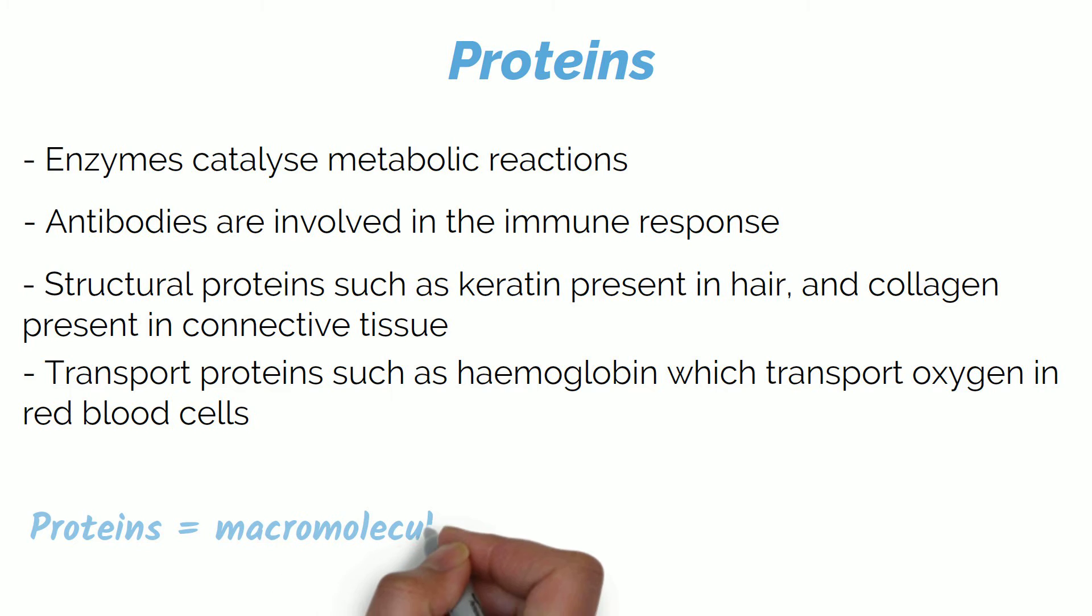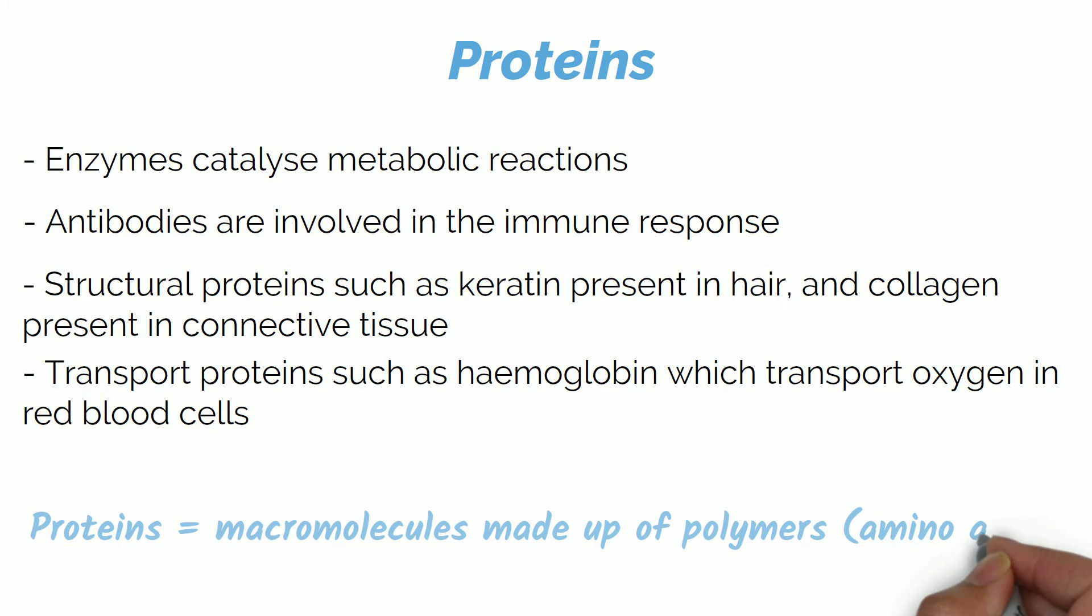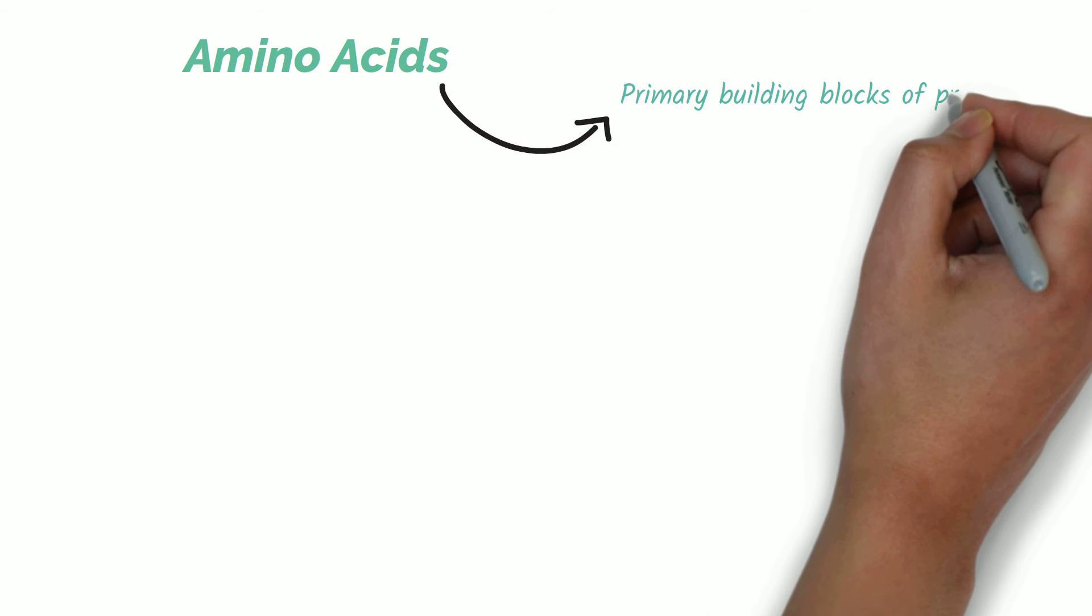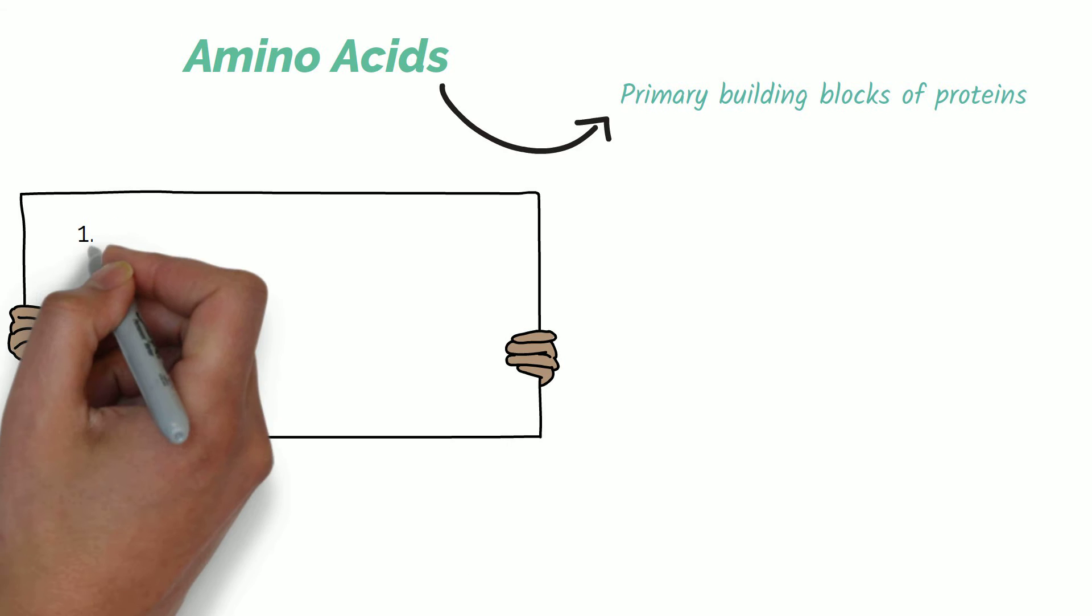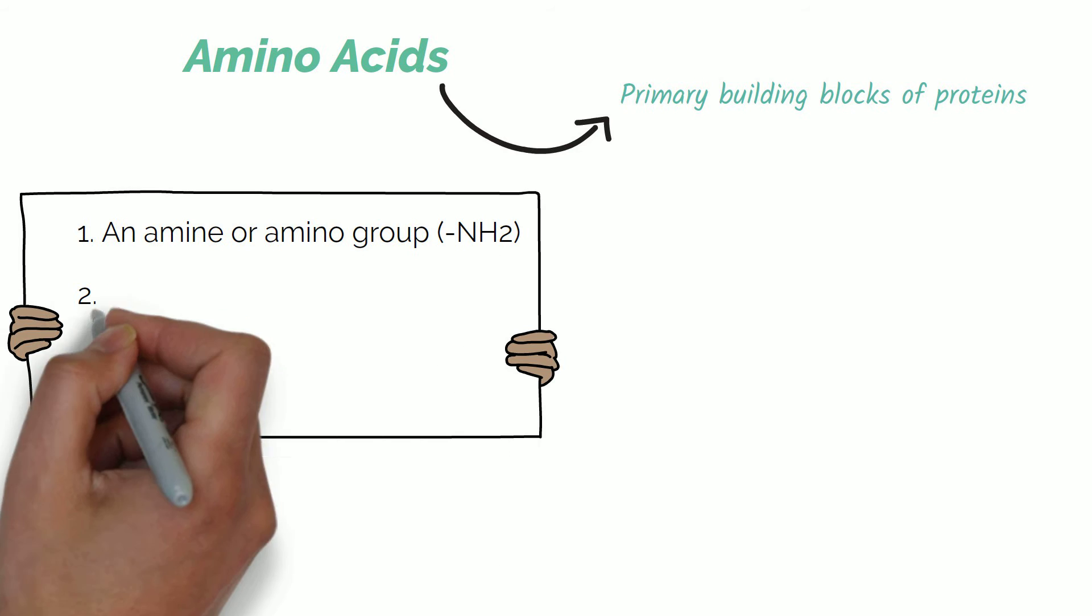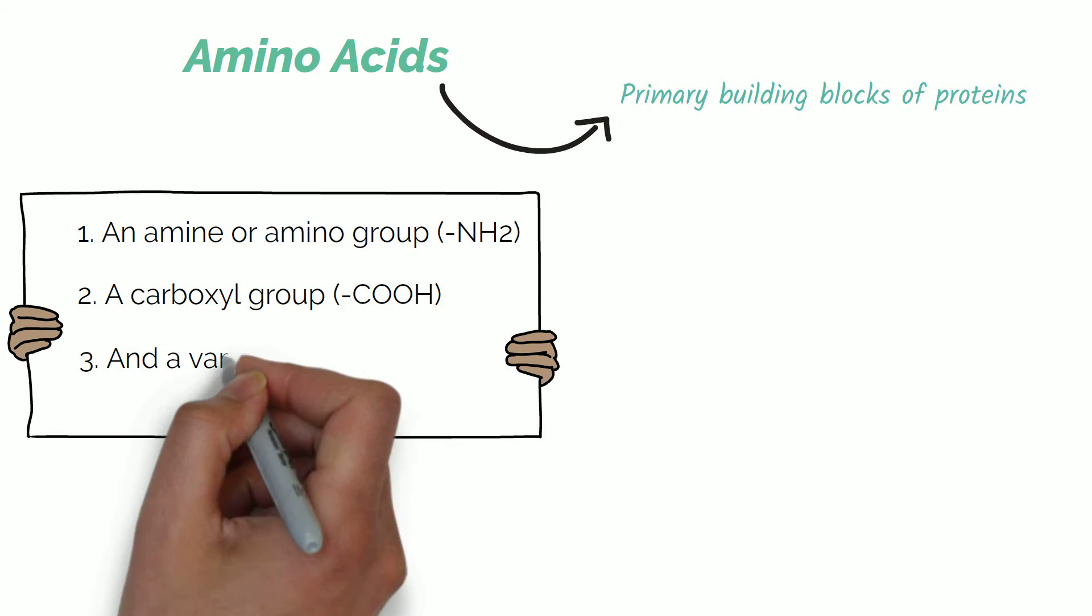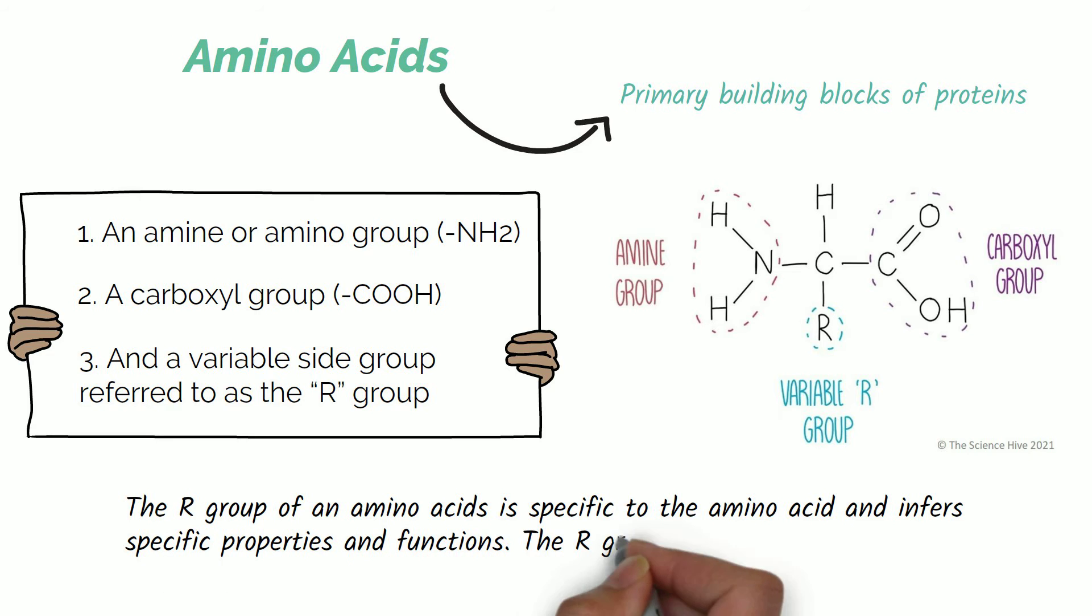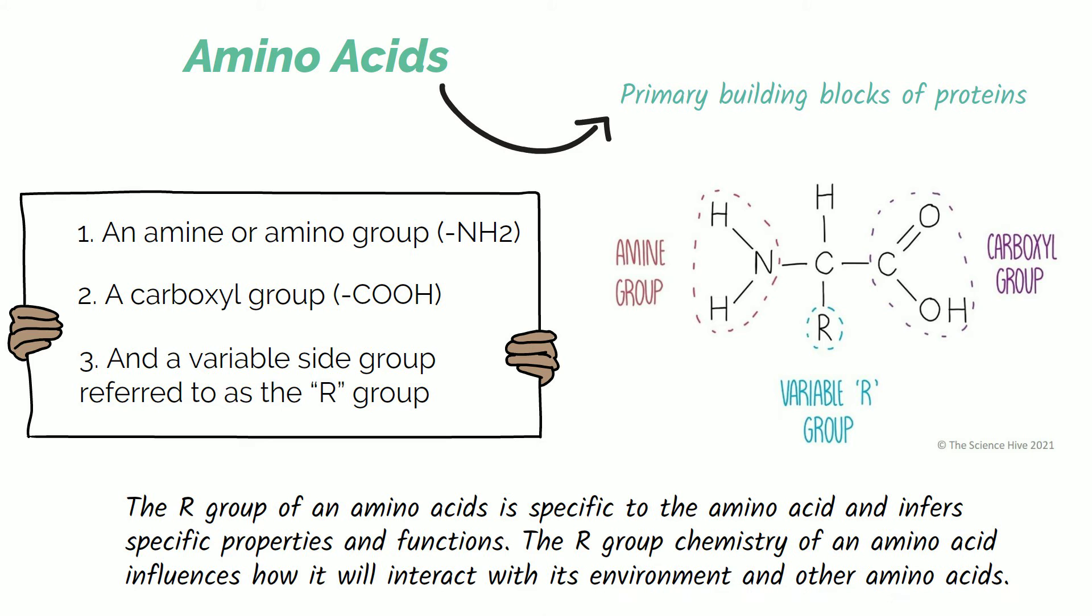Proteins are large molecules made up of polymers of amino acids. Amino acids are the primary building blocks of proteins. They have the same general structure consisting of an amine group, a carboxyl group and a variable side group referred to as the R group. The R group of amino acids is specific to the amino acid and infers specific properties and functions. The chemistry of the R group influences how amino acids interact with its environment and other amino acids.